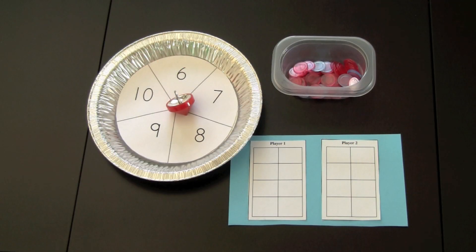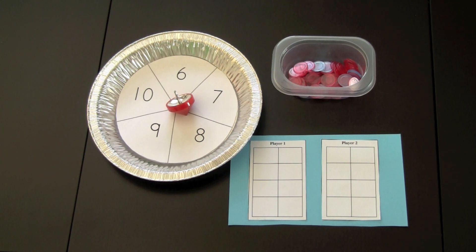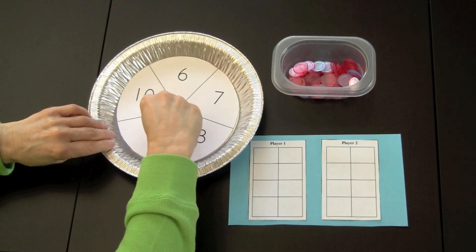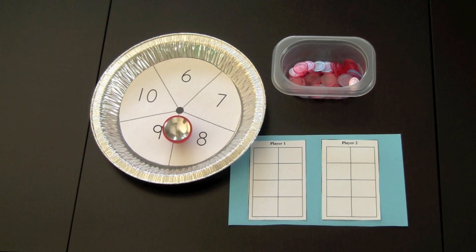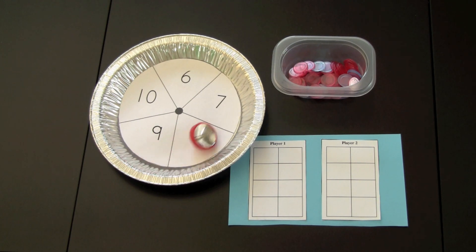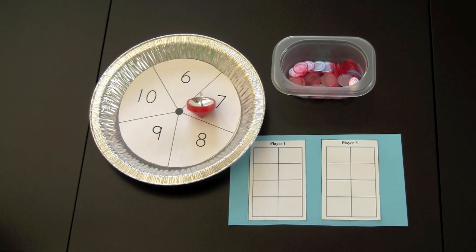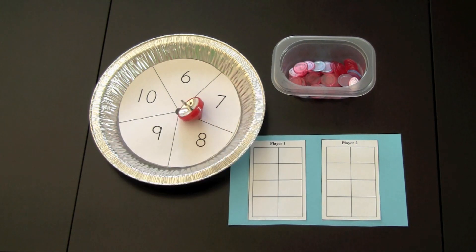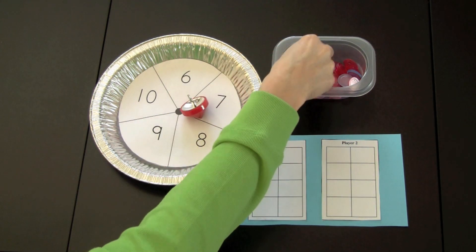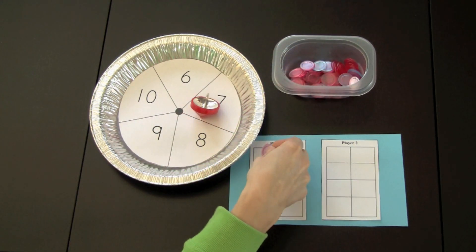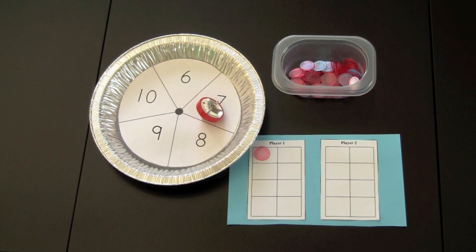This is a spinner recognition game. Player one takes a turn twisting the spinner. They have landed on the number seven, which is the focus number, so they would place a bingo chip on their tally board. The first person to have their tally board completed would be the winner.